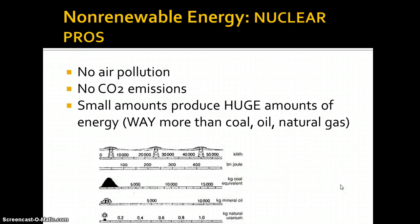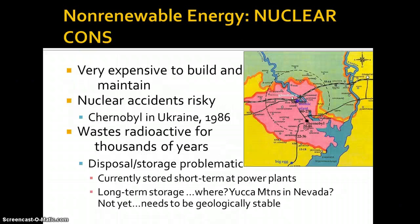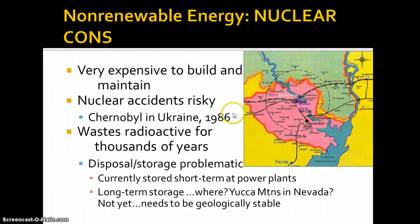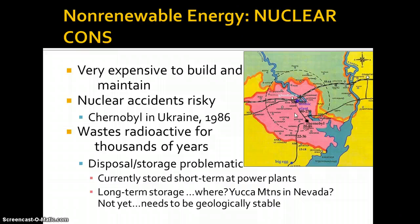Nuclear is definitely not efficient, but it does produce a lot of energy. The cons are significant: nuclear waste is radioactive for thousands of years. Accidents with a fission reactor are very risky — we are building more nuclear power plants now than ever before. The Chernobyl nuclear accident in 1986 left an entire area as a ghost town that is totally radioactive. Nobody can go there for thousands of years without risking DNA damage and mutations.